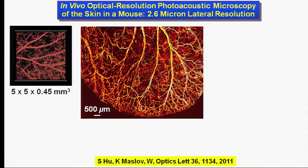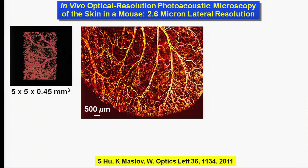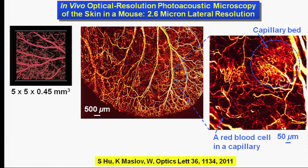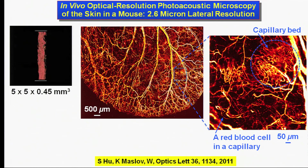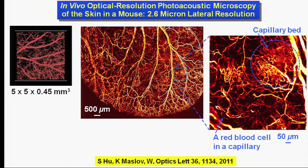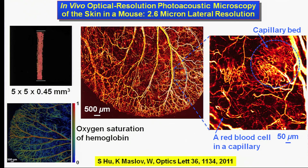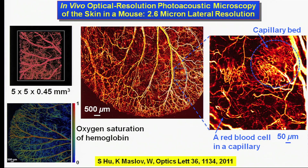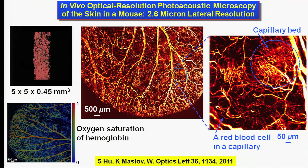Even the tiniest blood vessels in the skin can be imaged by optical-resolution photoacoustic microscopy. A close-up reveals capillary beds, single capillaries, even single red blood cells. In addition, oxygen saturation in single blood vessels is imaged as well, providing vessel-by-vessel oximetry.